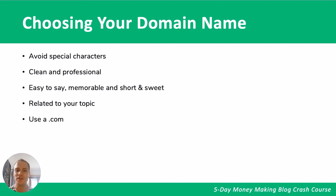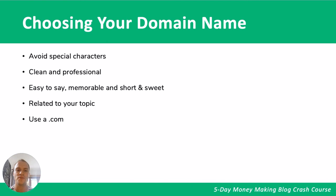We suggest going with a .com because it's the standard and very well known and trusted. If a domain name is taken under .com, it's okay to go with a .org or a .net — for example, mypetreptiles.net or mypetreptiles.org. But we highly suggest trying to use a .com. It will make your life easier and be seen as more professional, as it is the standard across the web.